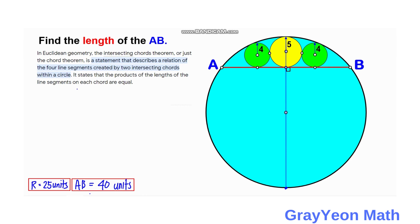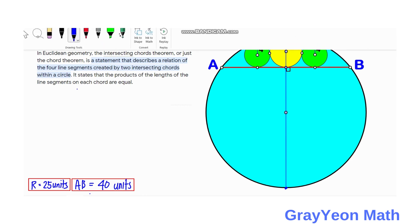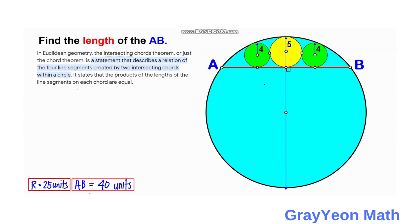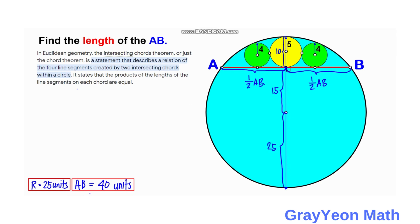In our case, the chords concerned are AB and the vertical blue diameter. For the horizontal chord, one segment is half of AB and the other is also half of AB. For the vertical chord, we have the diameter of the yellow circle — radius is 5, so 10 — going upward from the intersection, and downward we subtract 10 from 25, giving 15. And since the radius is 25, the remaining downward segment is 25.